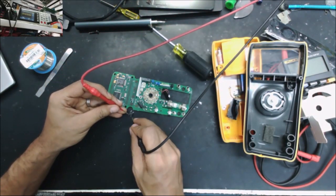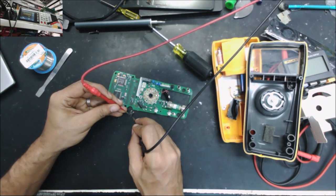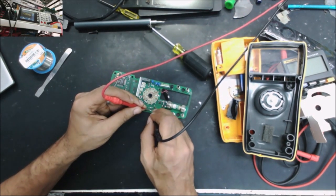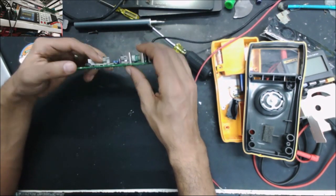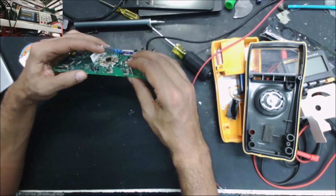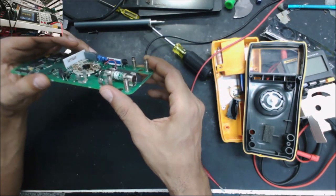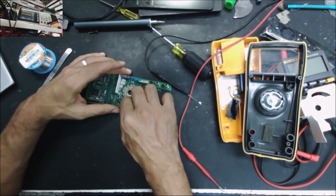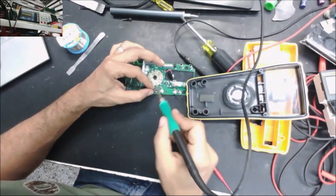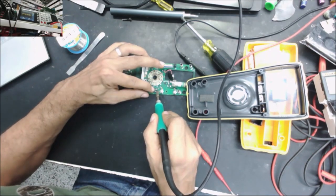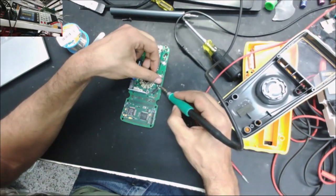The rectifier bridge tests good, but on the board it measures 36 ohms. I'm going to solder the rectifier bridge back in place.